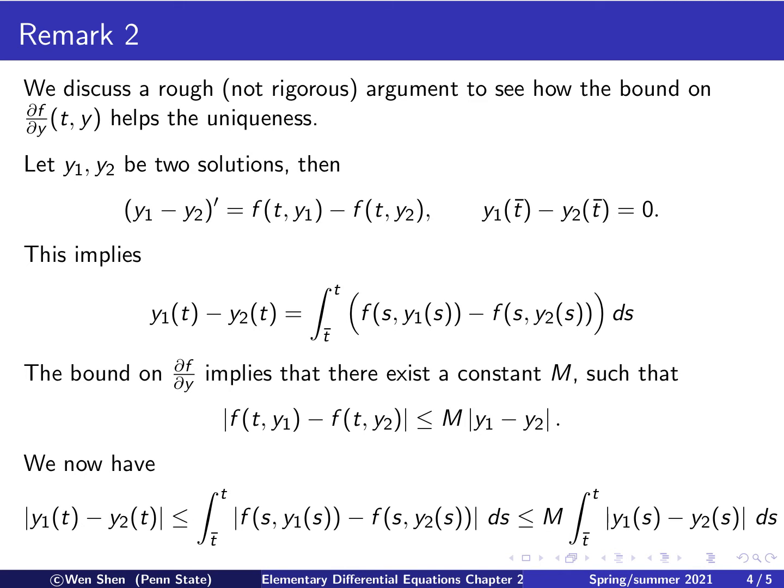Now let's take this equation and take absolute value signs on both sides. The absolute value of y1 minus y2 will be the absolute value of this integral. Then we can move the absolute value inside the integral, and this gives us something bigger, so we have a less than or equal sign. I will be taking the absolute value of the integrand. Now we use this estimate we just wrote there and replace this one by some quantity that is bigger. Since M is a constant, we pull it outside the integral.